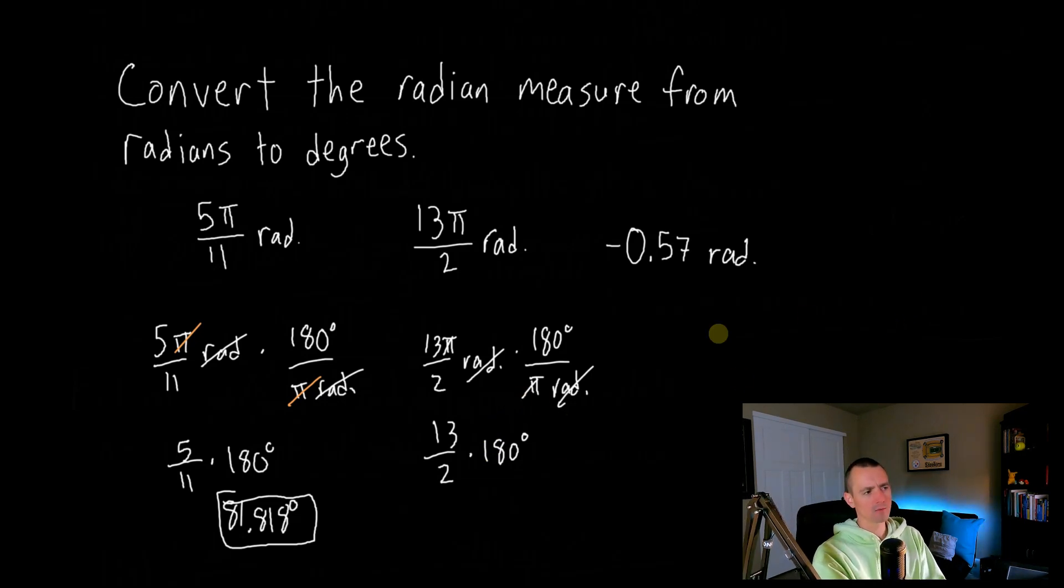So this last one's going to look a little bit weird because usually when you think about radians, you think about having pi in it. But you don't necessarily have to have pi in order for it to be radians. Theoretically, you could have a pi in a degree measure and you could have a radian without a pi in it.